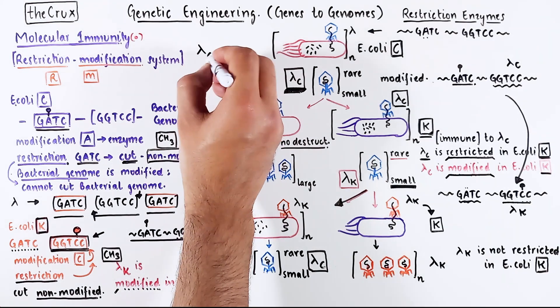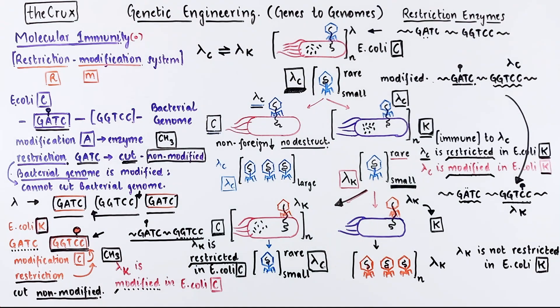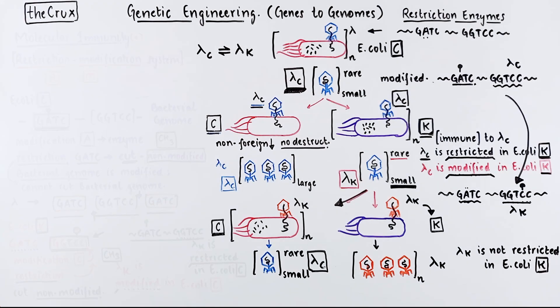Hopefully now you understand the interplay of changing modification status and its correlation with immunity which depends on the restriction modification system of the host. I have simplified the system to these sequences, but in principle you can have more than one restriction modification system per bacteria.